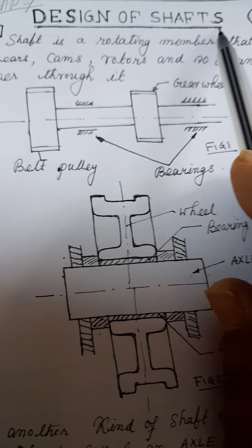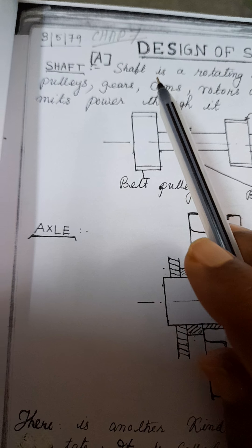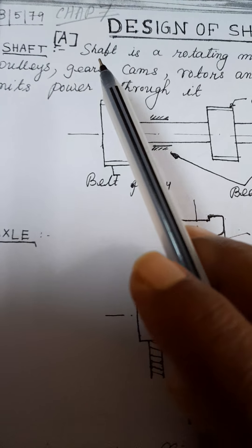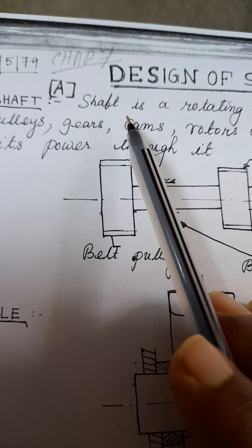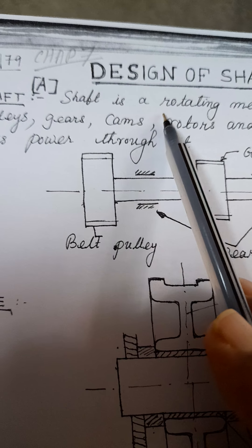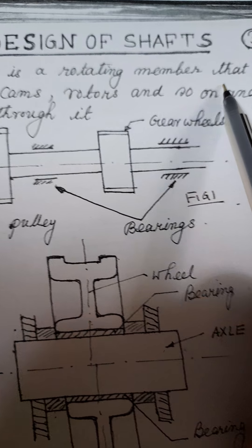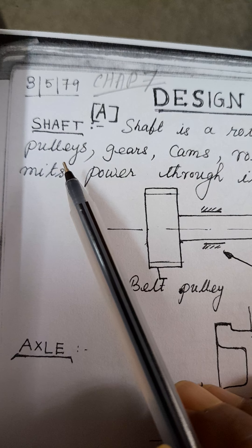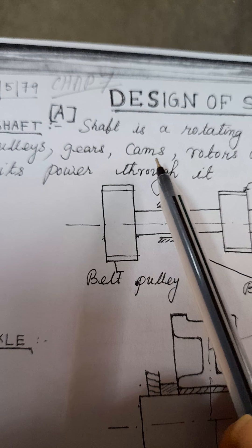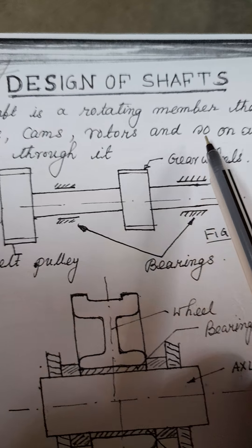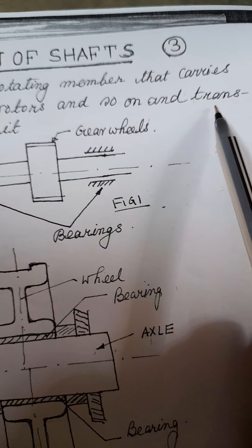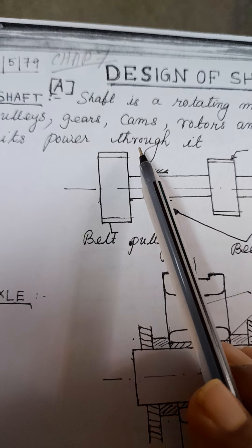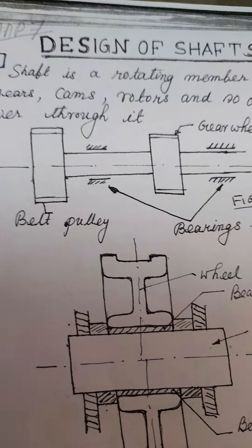Now, design of shafts. For the design of shafts, what is a shaft and what is an axle — that we have to define. The shaft is a rotating member that carries pulleys, gears, cams, rotors and so on and transmits power through it. This is the shaft.